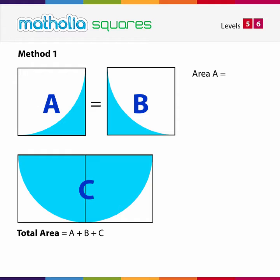The white part of A is a quarter circle of radius 1 unit. The area of the blue part can be found by subtracting the area of the quarter circle from the area of the square. The square has an area of 1 square unit and the area of the quarter circle is one quarter times pi times the square of the radius, which is 1, leaving an area of 1 minus one quarter pi square units. The combined area of A and B is 2 minus one half pi square units.